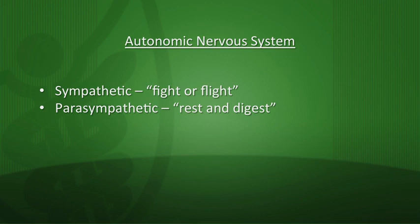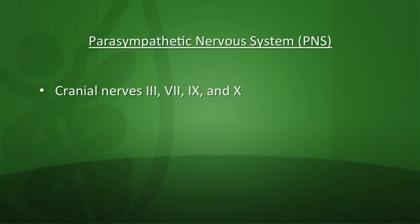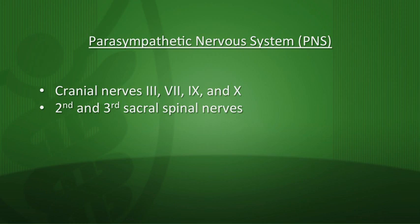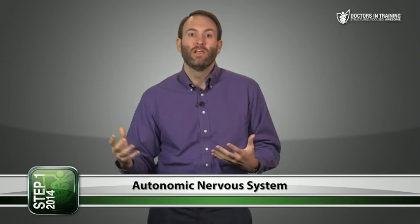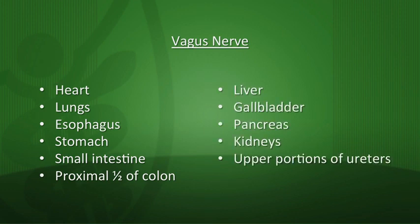Where in the body is the parasympathetic nervous system? Cranial nerves 3, 7, 9, and 10 all carry parasympathetic nerve fibers. We also see parasympathetic fibers at the second and third sacral spinal nerves. About 75 percent of all parasympathetic nerve fibers are in the vagus nerve — cranial nerve 10. Therefore, when we think about the parasympathetic nervous system, we're often talking about the vagus nerve and its innervation of the heart, lungs, esophagus, stomach, small intestine, colon, liver, gallbladder, pancreas, kidneys, and upper ureters.